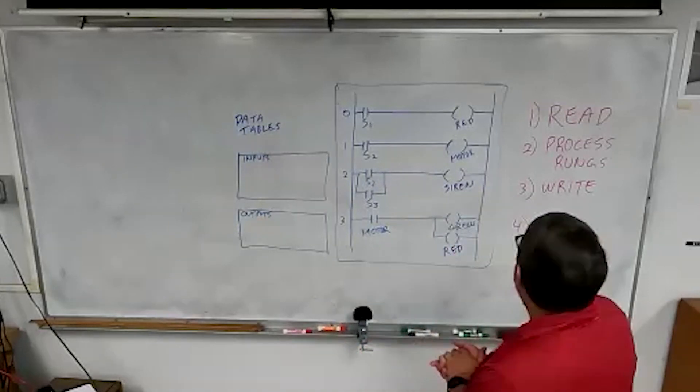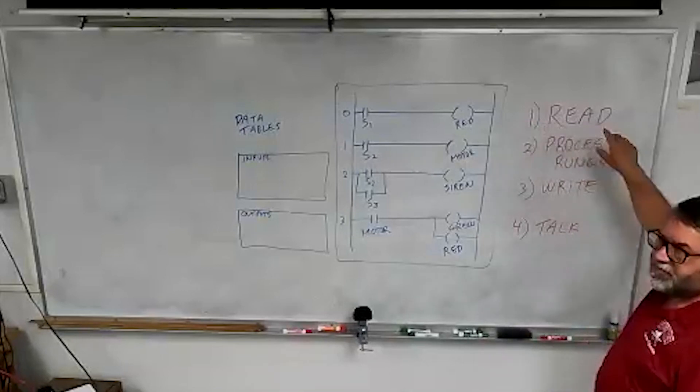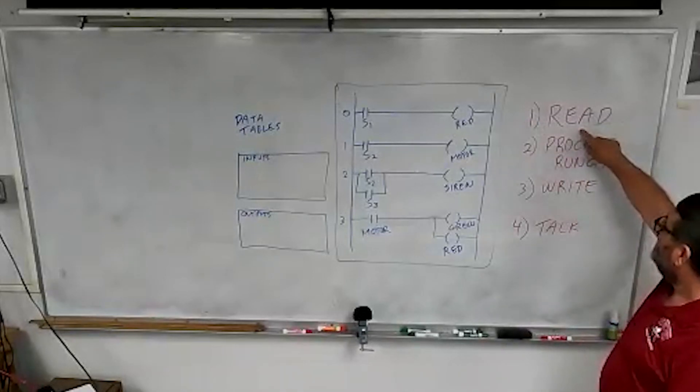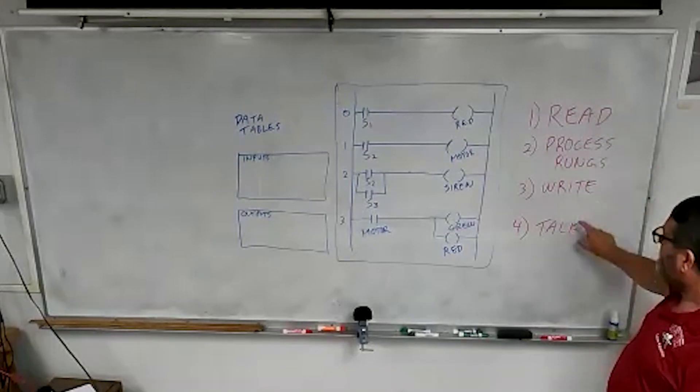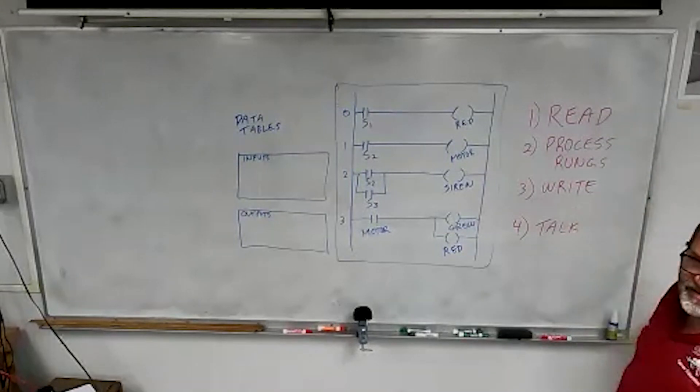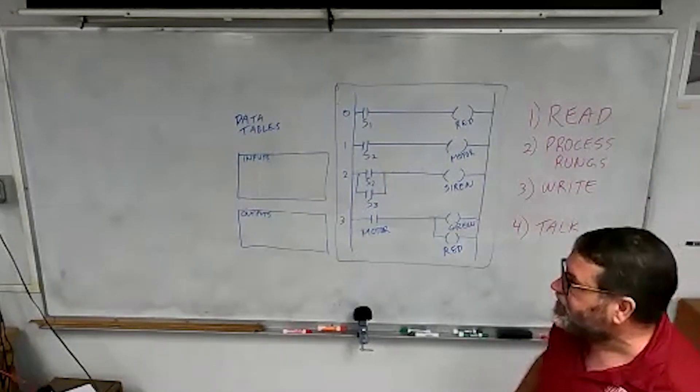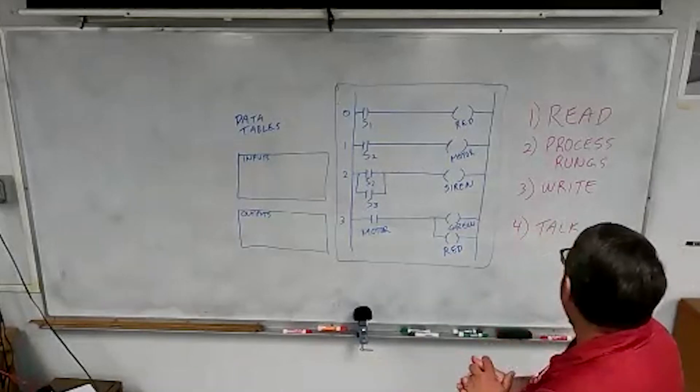But the way they do it, they go through four steps. So they read, then they process the rungs, and then they write, and then they do their socialize, and they talk. So let's talk about what each one of those do.